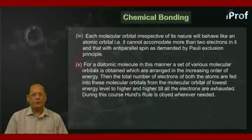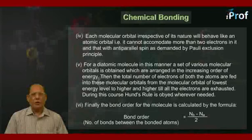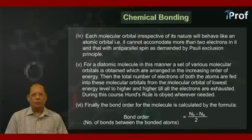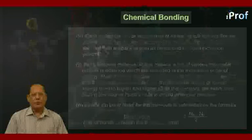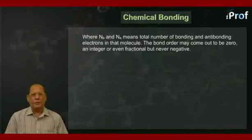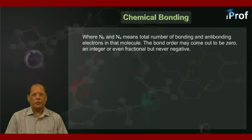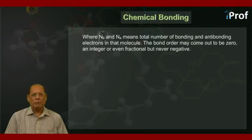Sixth point, finally, the bond order for the molecule is calculated by the formula. Bond order means the number of bonds between the bonded atoms is equal to NB minus NA upon two, where NB and NA means the total number of bonding and anti-bonding electrons in that molecule. The bond order may come out to be zero, an integer, or even fractional but never negative.